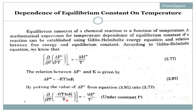T cancels out from this expression. This gives us minus R · d(ln K)/dT. Here we use the notation 'd' — a small 'd' represents a small change in any physical quantity, as opposed to the curly partial derivative symbol '∂'.